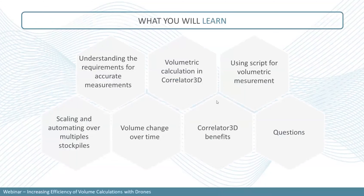To kick things off, here's what you will learn during today's webinar. We'll start by understanding the requirements for accurate measurements — how your project configuration can influence the overall accuracy of your volumetric calculation, what input data you need, and then we'll talk about how you can perform volumetric calculation in Correlator 3D, reviewing the different options available. We'll also discuss batch processing using scripts and how to scale up for multiple stockpiles.